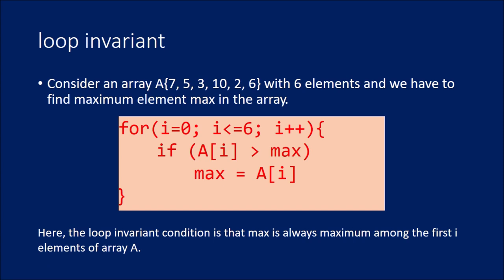So, here, for each iteration of the loop, it is true that max is holding the maximum value out of the i values in the loop. This is another example of loop invariant.